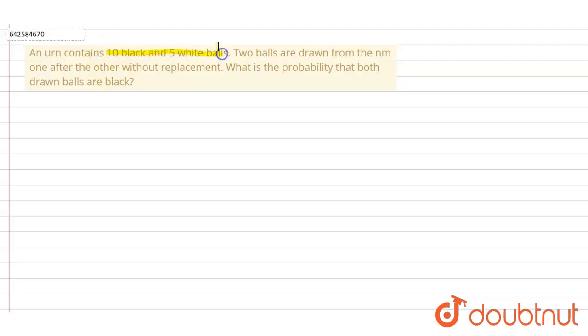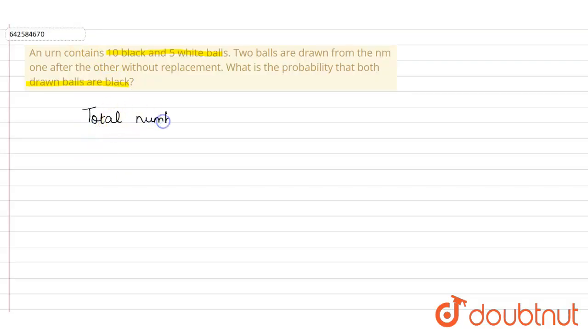Hello. The question is: in an urn there are 10 black balls and 5 white balls. Two balls are drawn at random one after another without replacement. We have to find the probability that both drawn balls are black. First of all, let's write down the total number of balls: 10 plus 5, that is 15 balls.